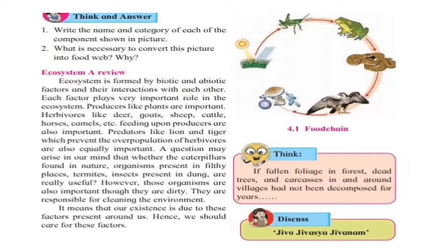We know about ecosystems. An ecosystem is formed by biotic and abiotic factors and their interaction with each other. Each factor plays an important role in the ecosystem. Producers like plants are important. Herbivores like deer, goat, sheep, cattle, horse, and camel that feed upon producers are also important.